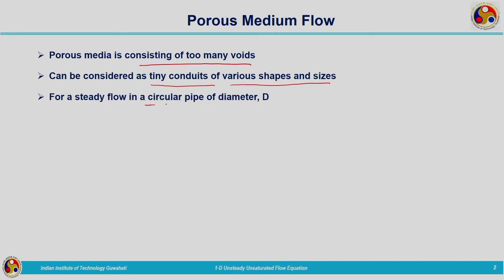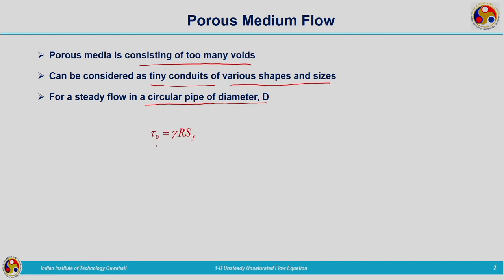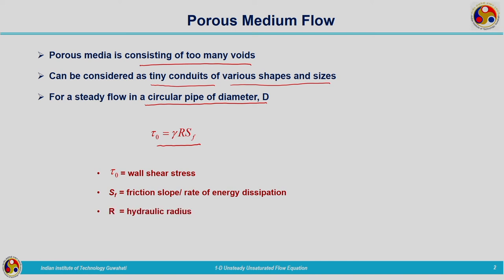What we are trying to do here is that the flow through the porous media can be considered as flow through a small diameter pipe. So for a steady flow in a circular pipe of diameter D, we know already that tau naught is equal to gamma R Sf. In this, tau naught is the wall shear stress, Sf is the friction slope or rate of energy dissipation, and R is the hydraulic radius.